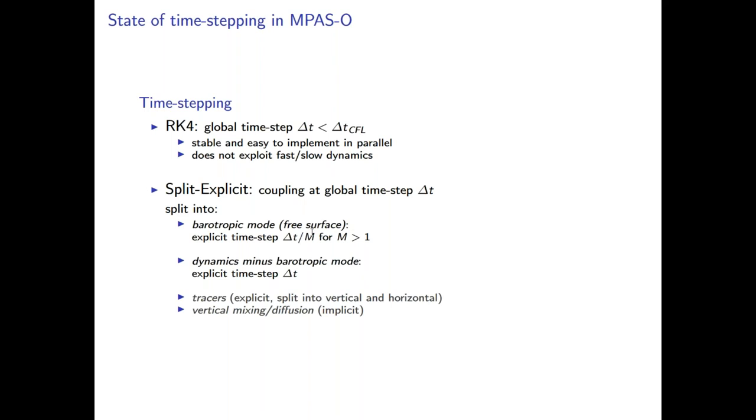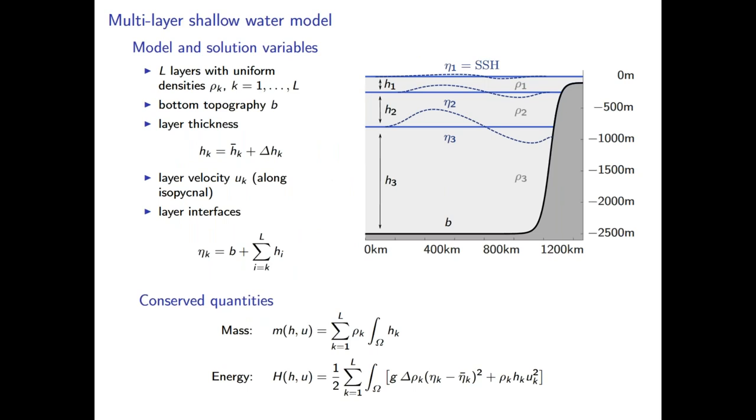And what I want to talk about here is an alternative to the split explicit method built using exponential integrators, which we believe has certain advantages, but there's also similarities. So to address the coordinate, we focus here on a simplified model. We use a multi-layer shallow water model, and you can think of this as an ocean model in isopycnal coordinates, but here we focus only on a few layers. So you have a bunch of layer thicknesses and layer velocities.